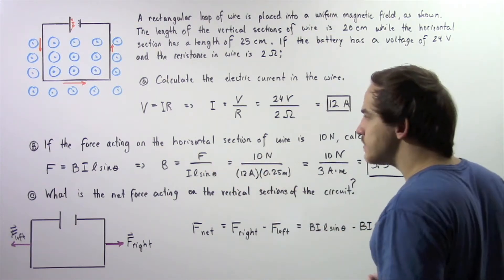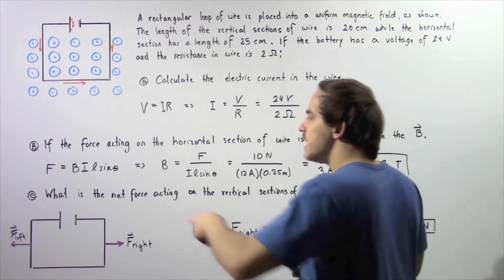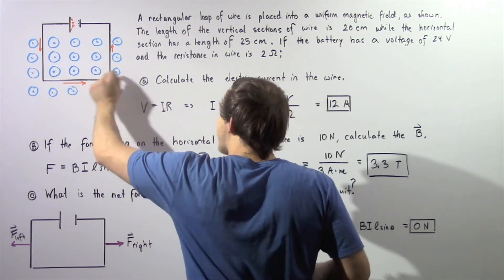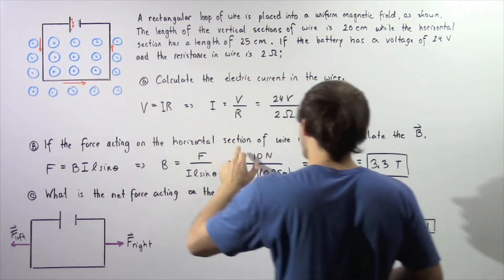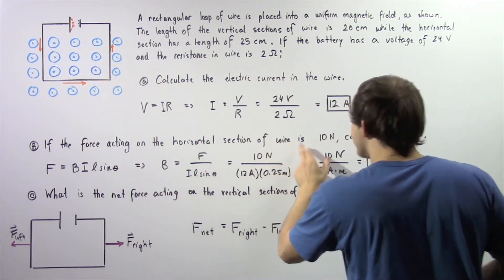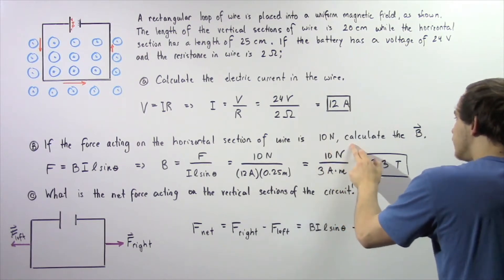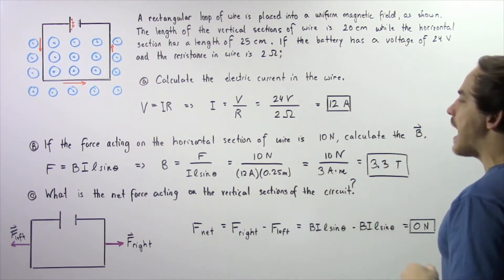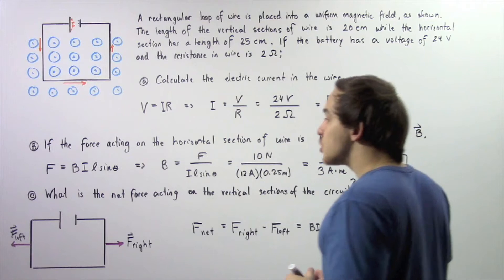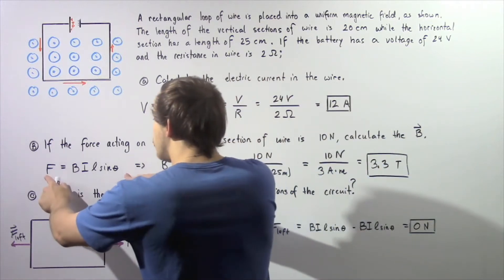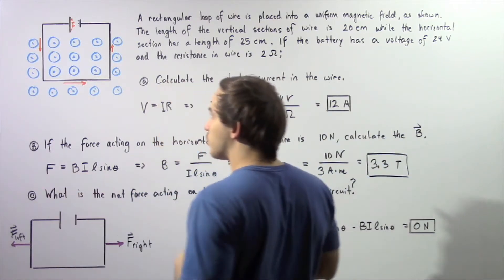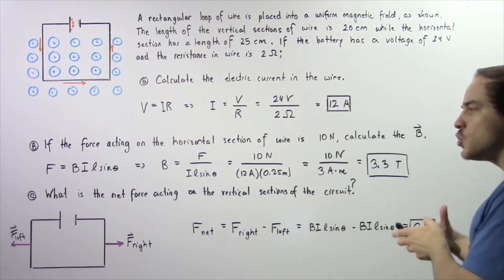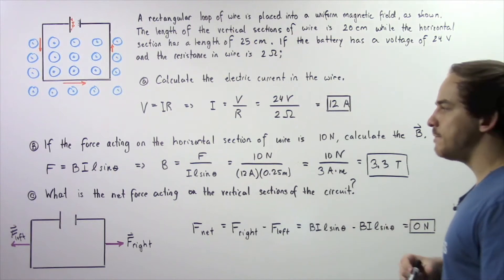Moving on to part B: if the force acting on the horizontal section of the wire is 10 newtons, we need to calculate the magnitude of our magnetic field B. We use the equation that relates our force to our magnetic field and solve for B.